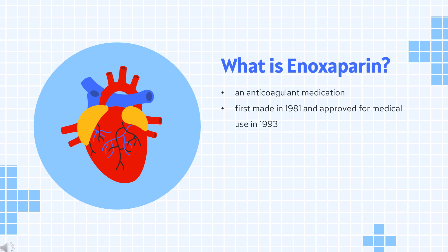Enoxaparin is made from heparin. In 2020, it was the 350th most commonly prescribed medication in the United States, with more than 500,000 prescriptions.